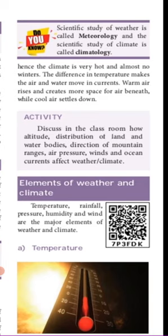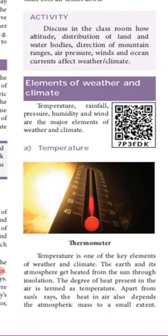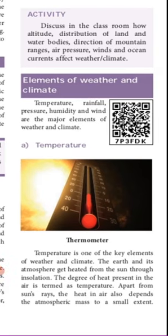Where there is direct sunlight it will be very hot and there won't be a winter season. Next, let us look at the elements of weather and climate. The major elements are: temperature, rainfall, pressure, humidity, and wind.